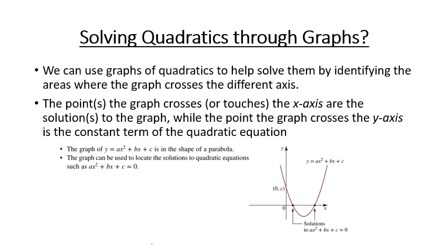As you can see in our diagram here, where the graph crosses our x-axis, they're going to be the solutions, and sometimes there are one, sometimes two, and sometimes you don't get a solution.